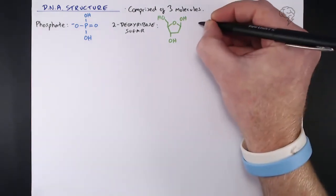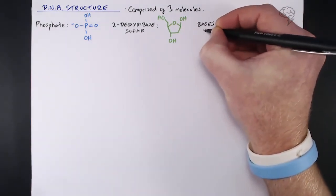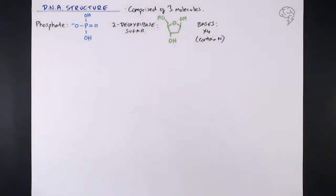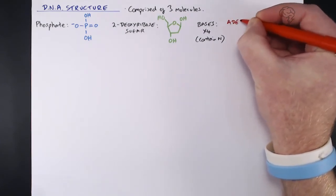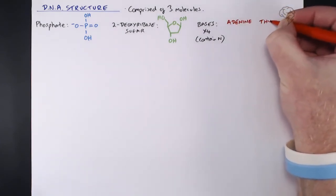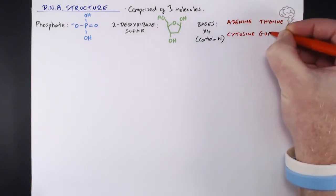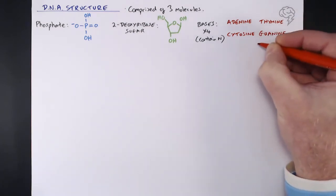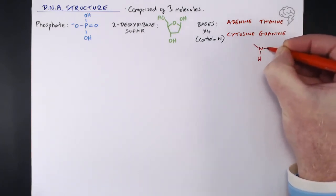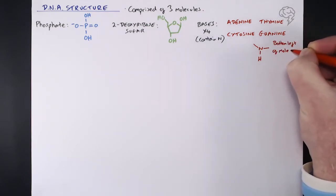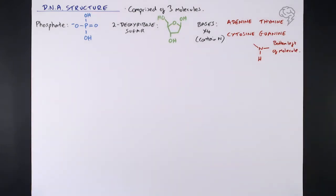Lastly we have our bases. There are four different types of base, and they all contain nitrogen. Our four bases are adenine and thymine, which come together as a pair, and cytosine and guanine, which also come together as a pair. Their structures are in your data sheet, but one important thing they all have in common is that they have an NH group at the bottom left of the molecule — a secondary amine group — and it's that part that gets involved in bonding to the sugar.